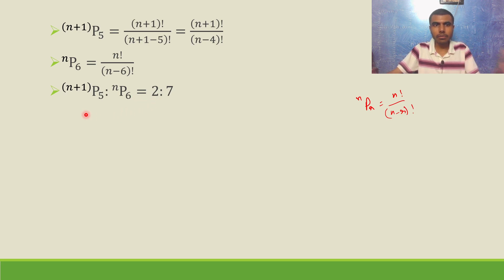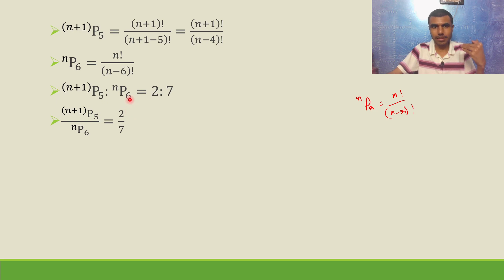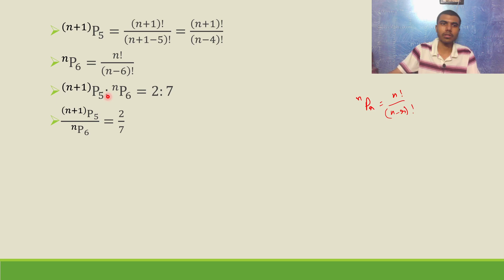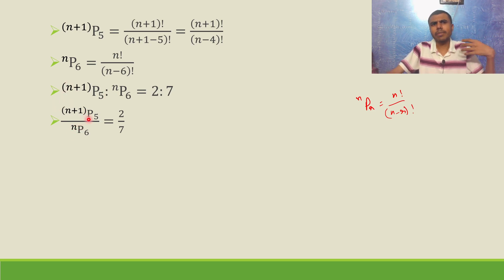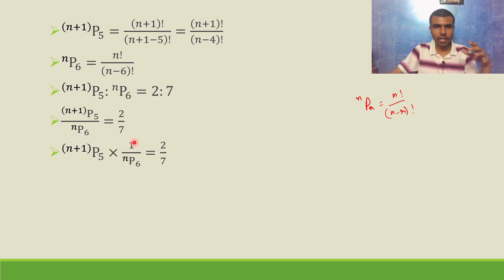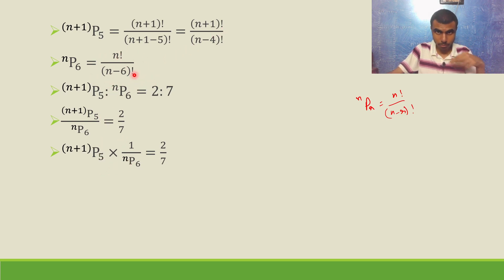Now they gave us that (n+1)P5 is to nP6 is 2 is to 7. That means (n+1)P5 divided by nP6 equals 2 by 7. Now I can write (n+1)P5 divided by nP6 as (n+1)P5 multiplied by 1 over nP6. The reciprocal of nP6 gives (n-6) factorial by n factorial.